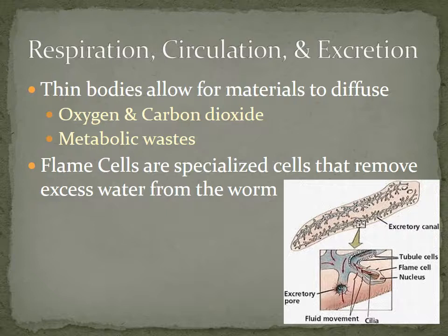Since flatworms are still fairly simple organisms, their respiration, circulation, and excretion can be covered quickly. They have very thin, flat bodies, which allows material to diffuse. Oxygen diffuses in, carbon dioxide waste diffuses out. Metabolic waste, if small enough, will also diffuse out; if not, it will leave through the mouth.